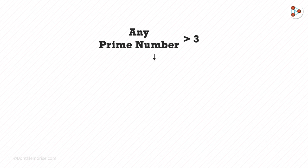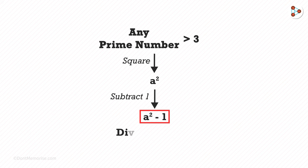In this video, we shall learn one very interesting trick. If we take any prime number greater than 3, square it and subtract 1 from it, the number obtained will be divisible by 24.